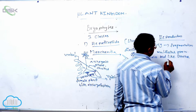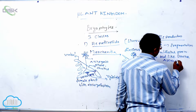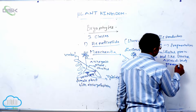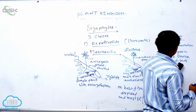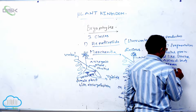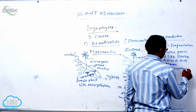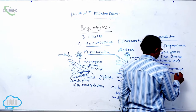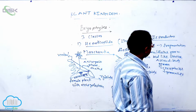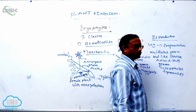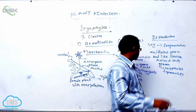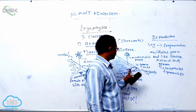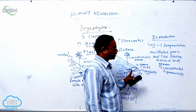Asexual reproduction also occurs through multicellular green bud-like structures known as gemmae. These gemmae are present in receptacles known as gemma cups. At the time of favorable conditions, the gemmae are separated from the plant and fall on the soil.